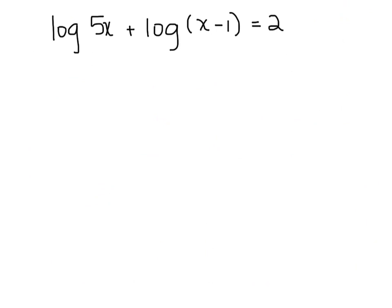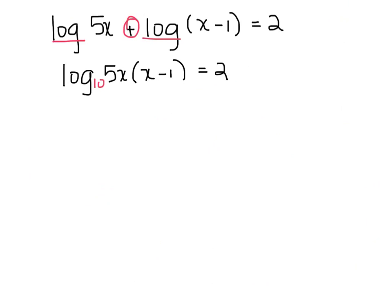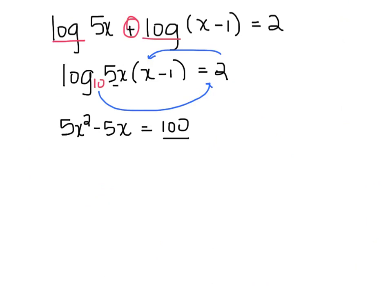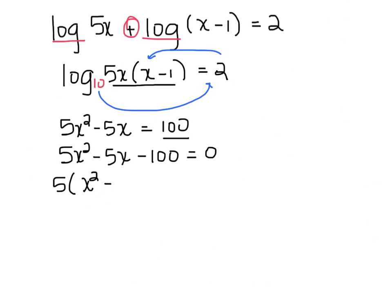Here I have two logs that I need to condense first. Since I'm adding in the middle, I condense to multiplication: log of 5x times (x minus 1) equals 2. The base is 10, so 10 squared equals 5x(x minus 1), giving 5x squared minus 5x equals 100. It's a quadratic, so I set it equal to zero and factor out the 5, getting my two solutions.